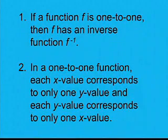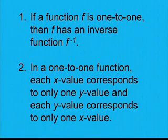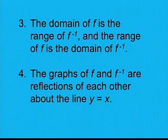Number one, if a function f is one-to-one, then f has an inverse function f inverse. Two, in a one-to-one function, each x value corresponds to only one y value, and each y value corresponds to only one x value. Three, the domain of f is the range of f inverse, and the range of f is the domain of f inverse. Four, the graphs of f and f inverse are reflections of each other about the line y equals x.